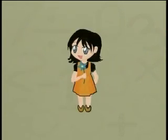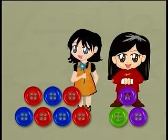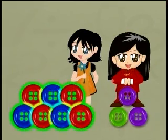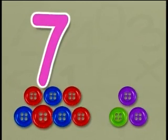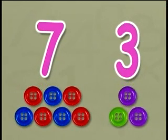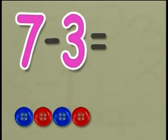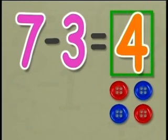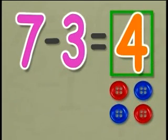Jenny buys 7 buttons. Susie buys 3 buttons. How many more buttons does Susie need to buy to have the same number as Jenny? Jenny has 7 and Susie has 3. So, to find the number of buttons Susie needs to buy, we take away 3 from 7, and we get 4. This means Susie needs to buy 4 more buttons. Then Susie will have the same number of buttons as Jenny.